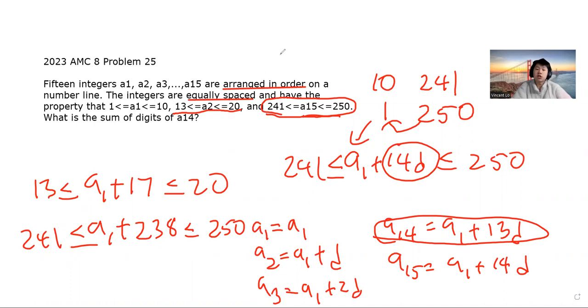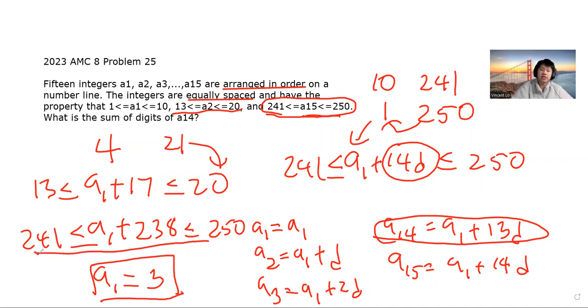But just to make sure, let's see what happens when A1 is equal to 4. If A1 is equal to 4, we get A1 plus 17 is 21, which is now too big and does not work anymore. So therefore, A1 must be equal to 3. Because if A1 is 2, then it doesn't satisfy this condition. If A1 is 4, it doesn't satisfy the first condition. So therefore, A1 is 3.